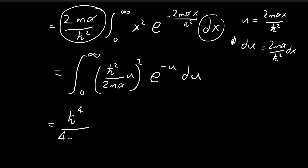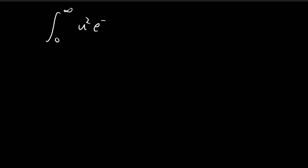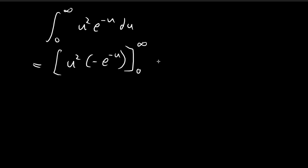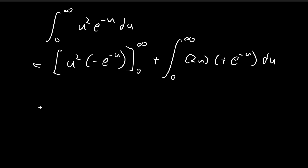Now our challenge is to solve the integral of u² e^(−u) du using integration by parts. We retain u² and integrate e^(−u) to get −e^(−u), evaluated from 0 to infinity. Substituting infinity: e^(−∞) completely overrides the u² term, giving 0. Substituting 0: 0 times 1 is also 0. So this whole boundary term is just equal to 0.